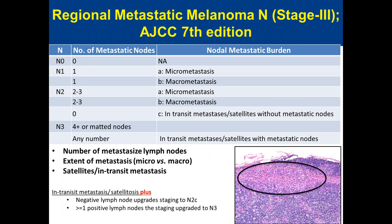In the 7th edition N staging, categories range from N0 to N3 based on the number of metastatic nodes and presence or absence of intralymphatic metastasis. If intransit or satellite metastasis is present even without any positive lymph node, the patient is staged as N2C. If one or more positive lymph nodes are also present alongside intralymphatic metastasis, staging becomes N3C.